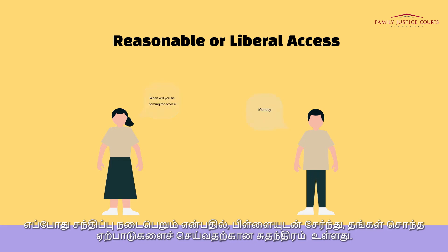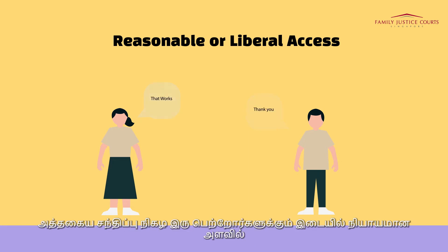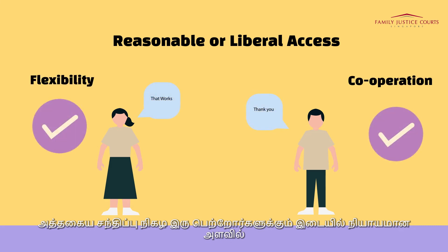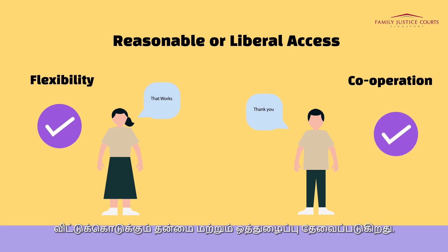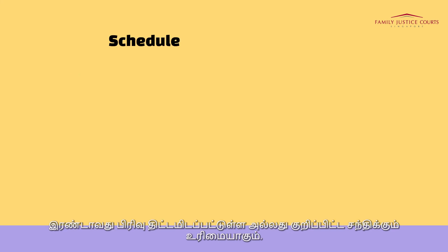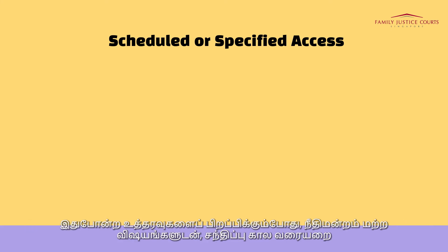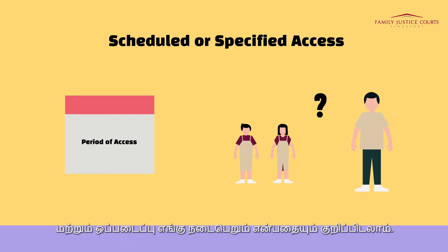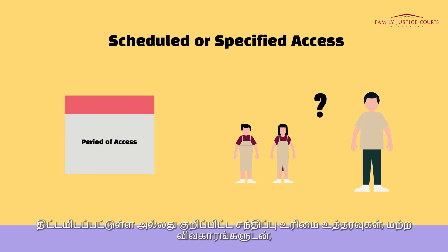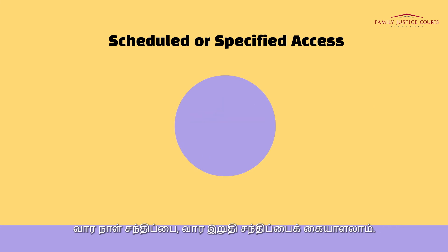The second category is scheduled or specified access. This is where the court makes specific orders on when and how access will take place. When making such orders, the court may also specify, among other things, the period of access and where the handover would take place. Scheduled or specified access orders could deal with, among other things, weekday access, weekend access, overnight access, school holiday access, public holiday access, access during special occasions, and overseas access.